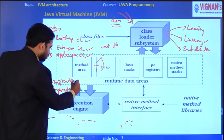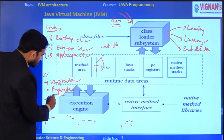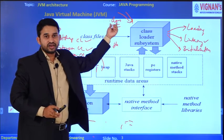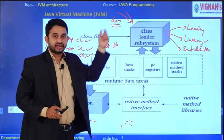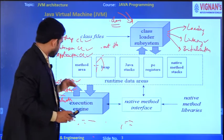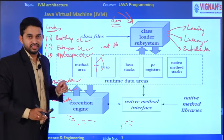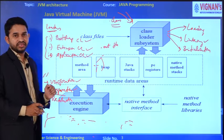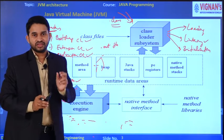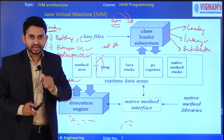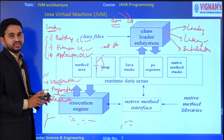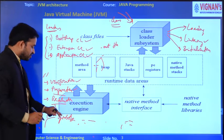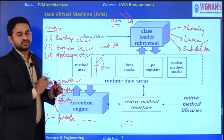Verification checks whether the .class file is in the correct format and error-free — that is why Java is secure. The verifier is also called the bytecode verifier. Preparation allocates memory to local variables declared in the program. Resolution simply allocates symbols — it handles the symbolic representation of whatever symbols we use in our program.